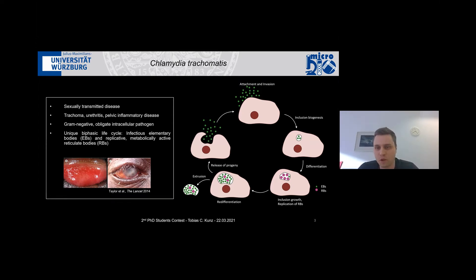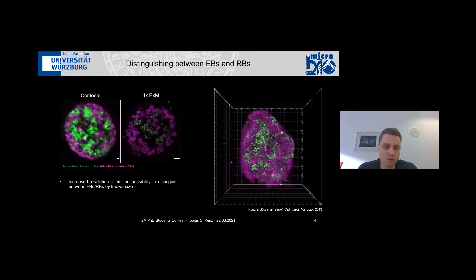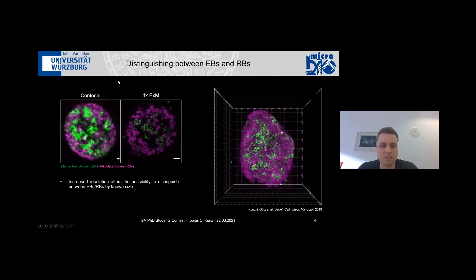Before we started using expansion microscopy for bacteria, there was no protocol yet on how to do this. We created one and enabled the expansion of Chlamydia, where we have the elementary body shown in green — the infectious form — and in magenta the replicative form.